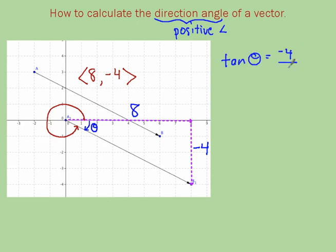That tells us that we're going to use the tangent function. Opposite over adjacent, y over x. Therefore, to find that theta, we want to use the inverse tangent function of negative 4 over 8.